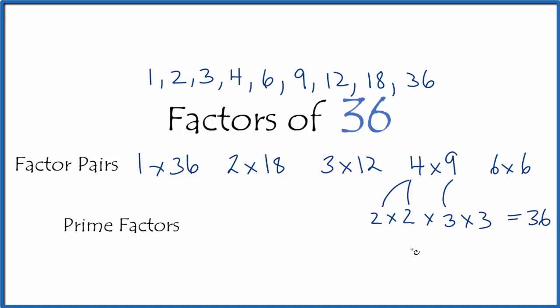We could also write 2 times 2 is 2 squared, times 3 times 3 is 3 squared. That would also give us 36 here.